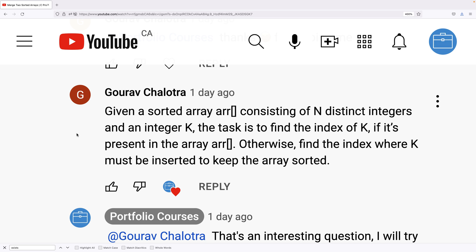On a recent video, a viewer asked this question: given a sorted array consisting of N distinct integers and an integer K, the task is to find the index of K if it's present in the array. Otherwise, find the index where K must be inserted to keep the array sorted.